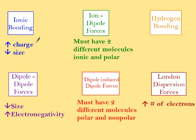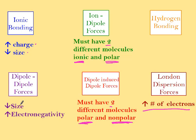For ionic bonding, higher charge and smaller size gives a stronger ionic bond. For ion-dipole, you need two different molecules—one ionic and one polar. For London dispersion, more electrons means stronger force. Dipole-induced involves a polar and a nonpolar. For dipole-dipole, which includes hydrogen bonding, we want smaller size and more electronegative atoms.